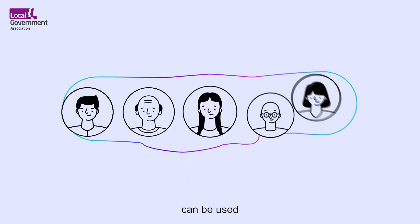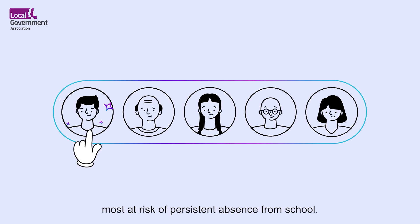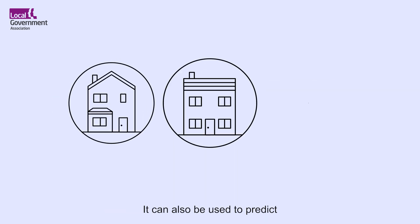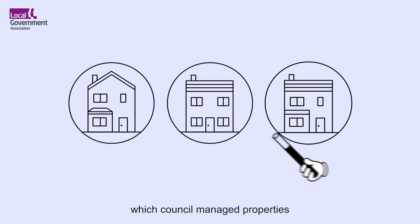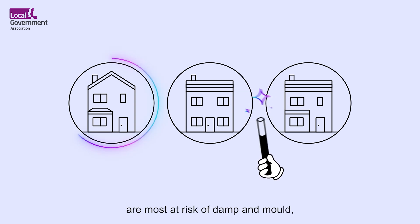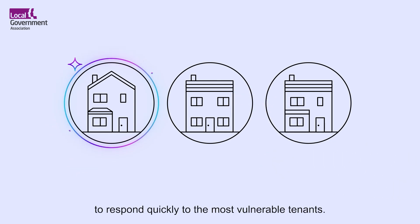These techniques can be used to identify the young people most at risk of persistent absence from school. It can also be used to predict which council managed properties are most at risk of damp and mould, to respond quickly to the most vulnerable tenants.